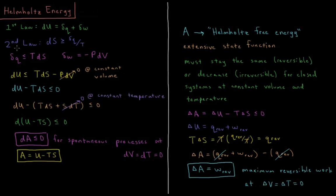The second law of thermodynamics says that for any physical process in an isolated system, the entropy change ds is greater than or equal to dq divided by temperature. Rearranging for heat and work: the heat during some infinitesimal change is less than or equal to T ds, and the work during that perturbation is equal to minus p dV — pressure times change in volume.